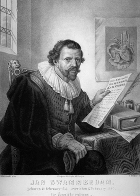Swammerdam was convinced that the creation, or generation, of all creatures obeyed the same laws. Having studied the reproductive organs of men and women at university, he set out to study the generation of insects. He had devoted himself to studying insects after discovering that the king bee was indeed a queen bee. Swammerdam knew this because he had found eggs inside the creature. But he did not publish this finding.